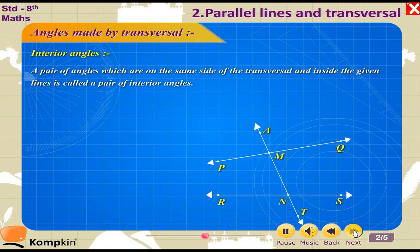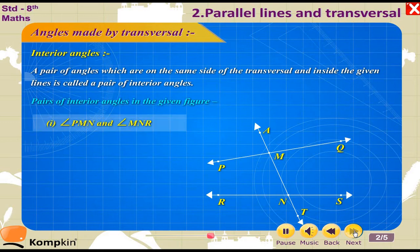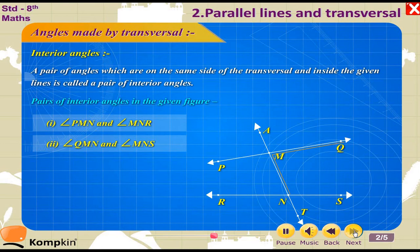A pair of angles which are on the same side of the transversal and inside the given lines is called a pair of interior angles. Pairs of interior angles in the given figure: 1. Angle PMN and angle MNR; 2. Angle QMN and angle MNR.